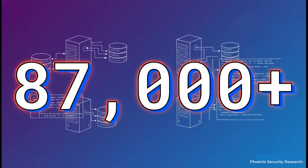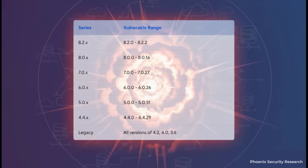This is not some theoretical issue. The scale is massive. Census scans have found over 87,000 MongoDB instances sitting out there exposed to the public internet. Every single one of them is a potential target. The blast radius is incredibly wide — it goes all the way from the latest 8.x series back to really old legacy versions. This means a huge percentage of all MongoDB installations, whether in modern cloud setups or old on-prem servers, are likely affected.